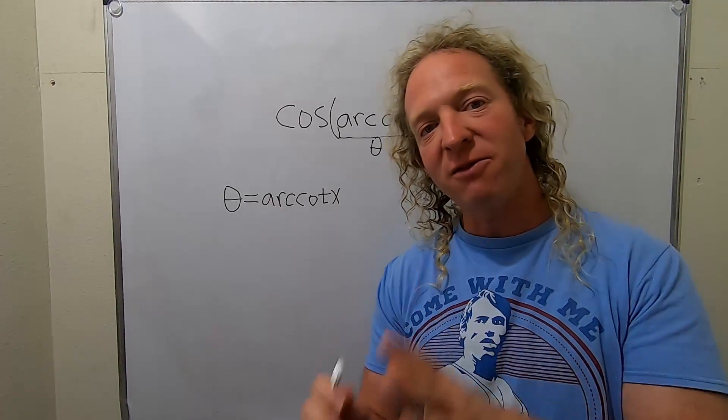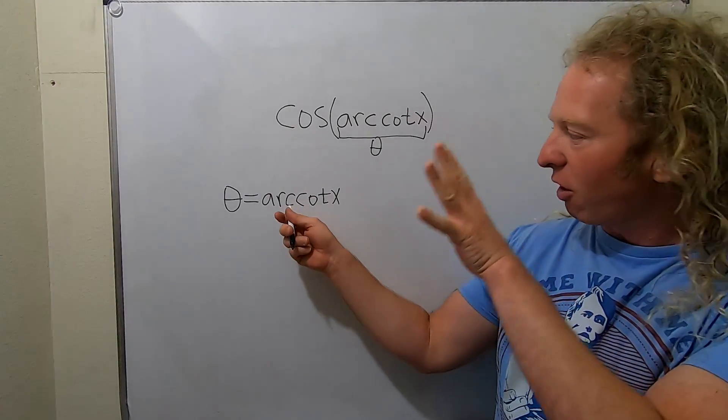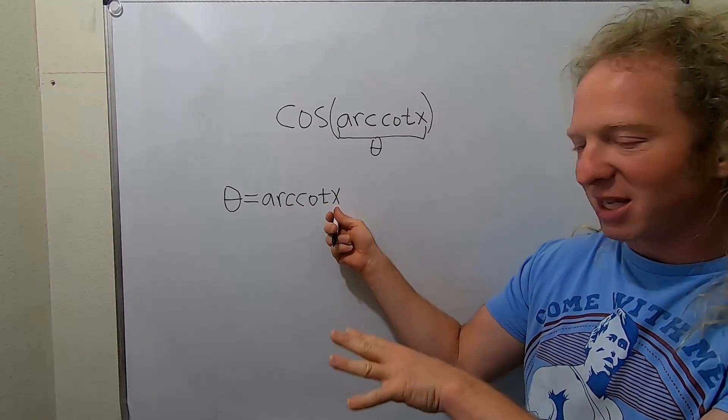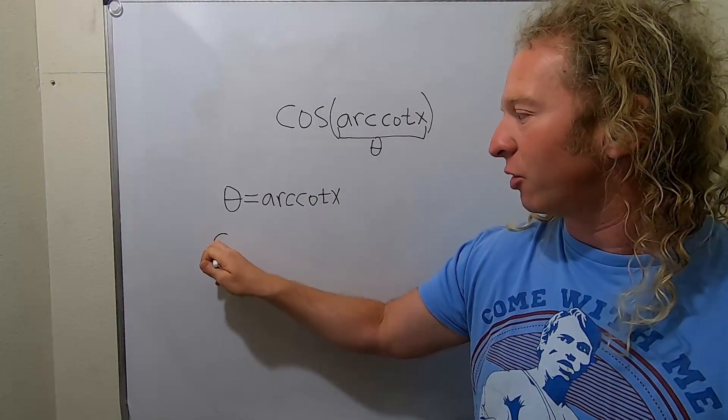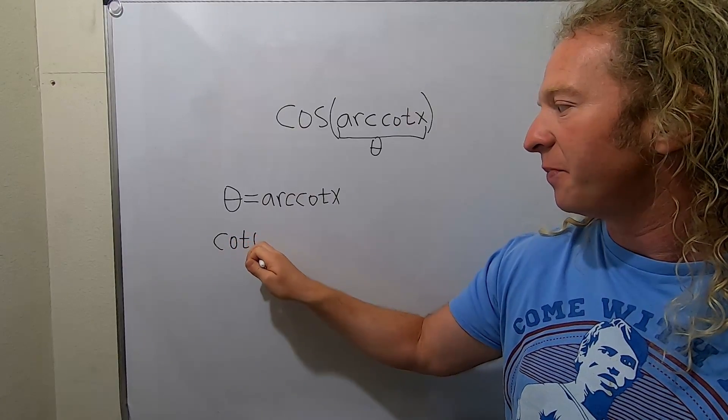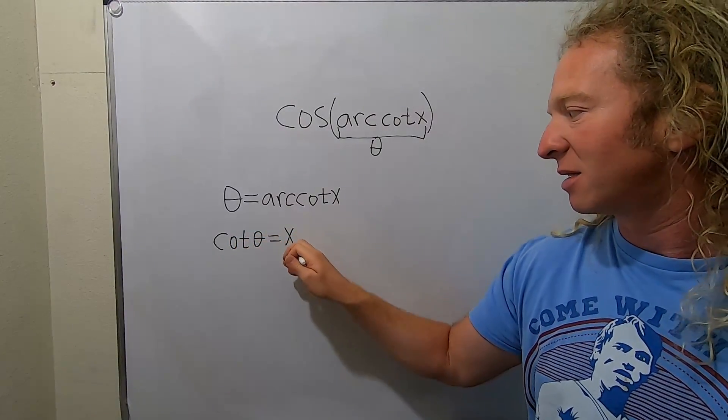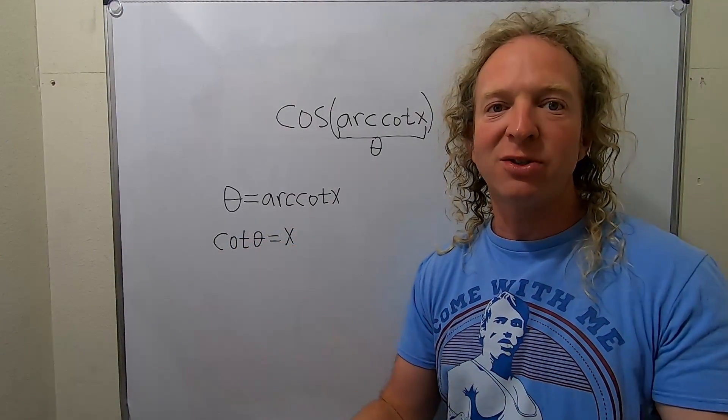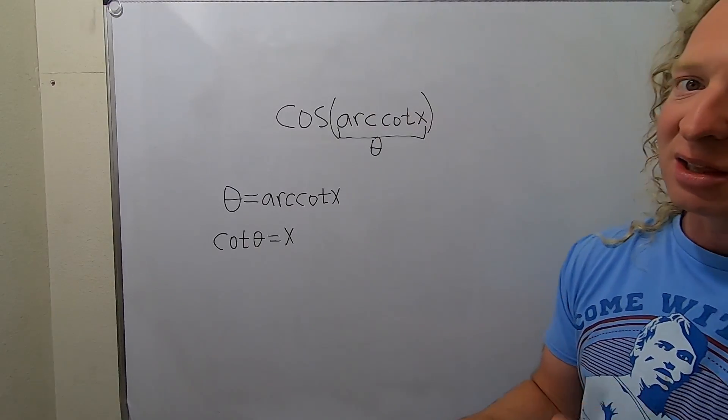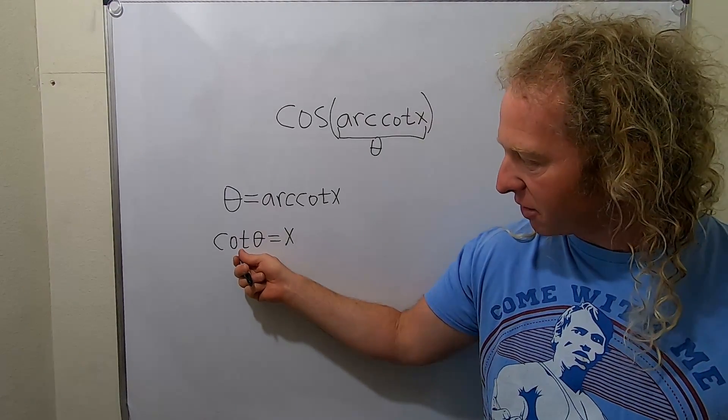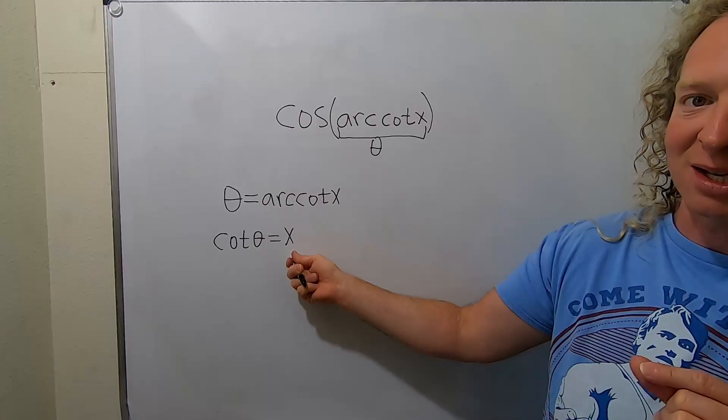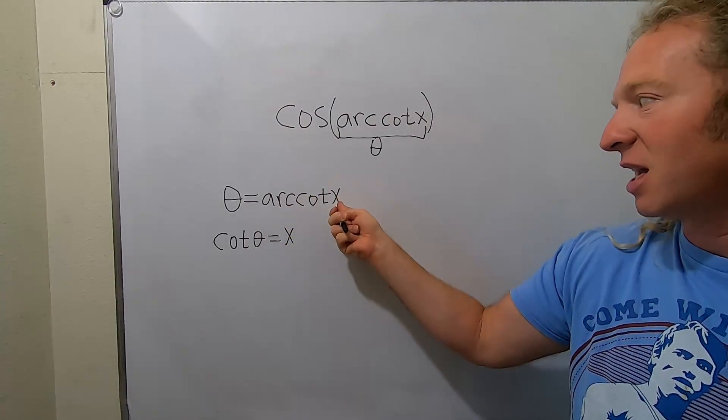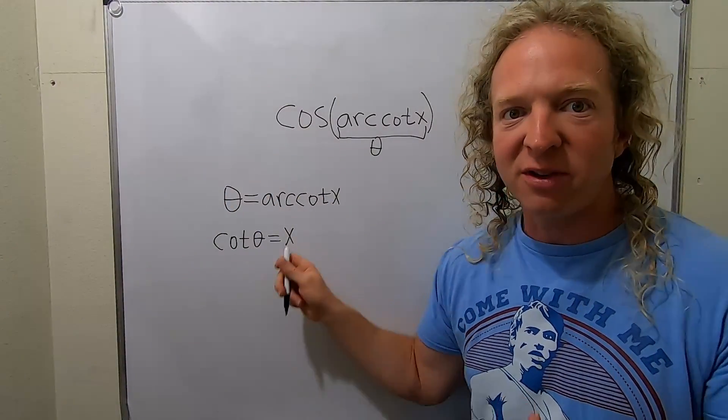Now we use the fact that this is the inverse cotangent. So if the arccotangent takes x and sends it to theta then the cotangent function takes theta and sends it back to x. That's what it means for functions to be inverses. In fact let's explain it backwards. If the cotangent function takes theta and sends it to x then the arccotangent takes x and sends it back to theta. So everything is okay.